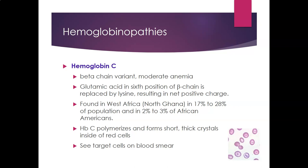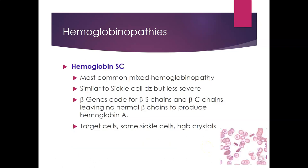Hemoglobin C is also a beta chain variant in which you see moderate anemia. Glutamic acid at the sixth position of the beta chain is replaced by lysine, resulting in a net positive charge for the molecule. It is found in West Africa—especially northern Ghana—in 17 to 20% of the population and in 2 to 3% of African Americans. The hemoglobin C polymerizes and forms short, thick crystals inside red cells, and you tend to see target cells on the blood smear.